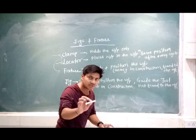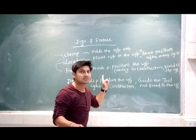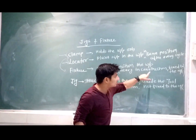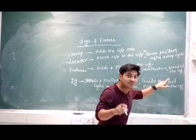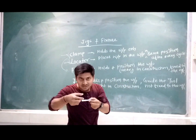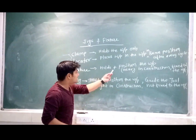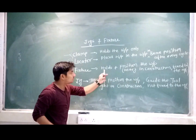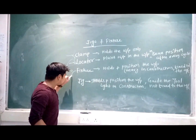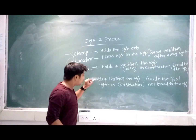The combination of clamp and locator is called a fixture. A fixture holds and positions the workpiece but does not guide the tool. It is generally heavy in construction and fixed to the machine. For example, a tube light fixed in a fixture — that is also a fixture.